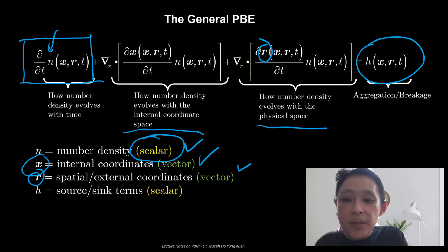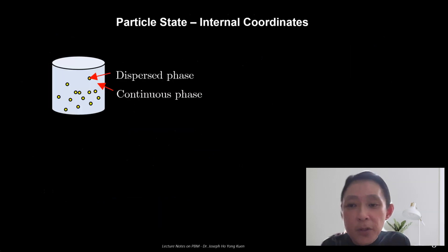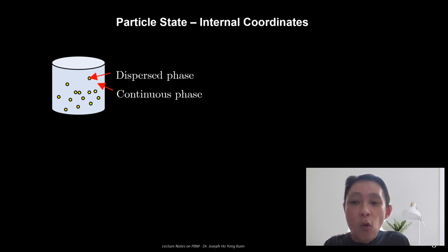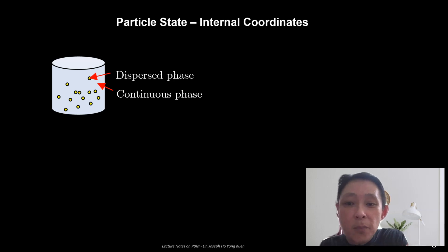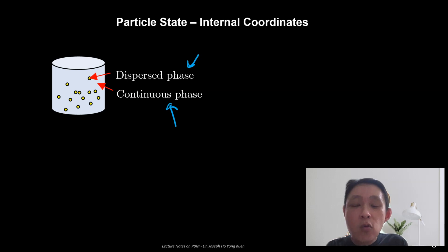The source and sink term is going to be a scalar component. Now let's take a look at what defines the number density function. Before we talk about it, we need to understand what the particle state is. Consider a tank where you are dispersing some solids into water. The dispersed phase here would be the solid phase and the water that surrounds the solid will be what we call the continuous phase. So how do we characterize the number density function given such a system?